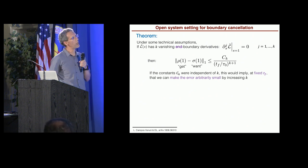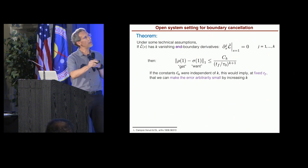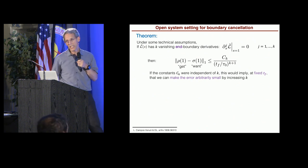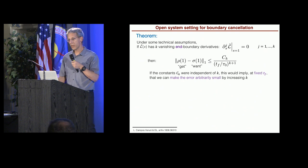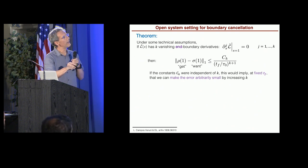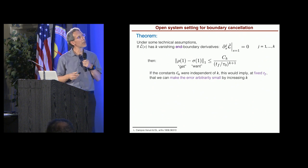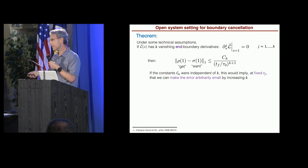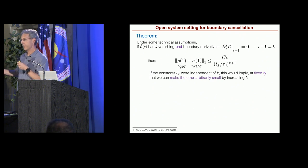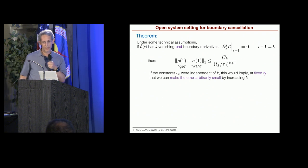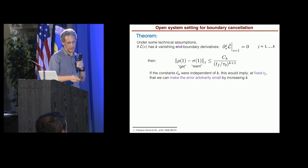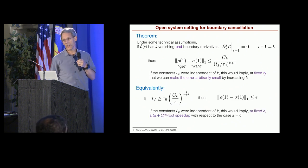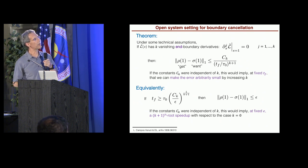So if you look at this equation, you see that if only these constants Ck were independent of K, then this would imply that at fixed evolution time, we could make the error arbitrarily small just by increasing the number of derivatives that vanish at the boundary. Right? If only this were true. We'll get to that.